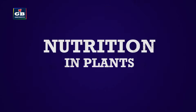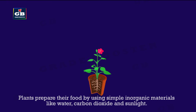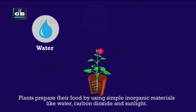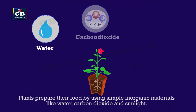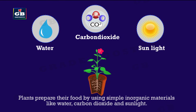Now let us see nutrition in plants in detail. Plants prepare their own food using simple inorganic materials like water, carbon dioxide, and sunlight. This process is called photosynthesis.